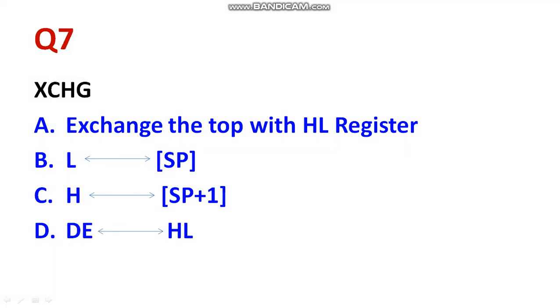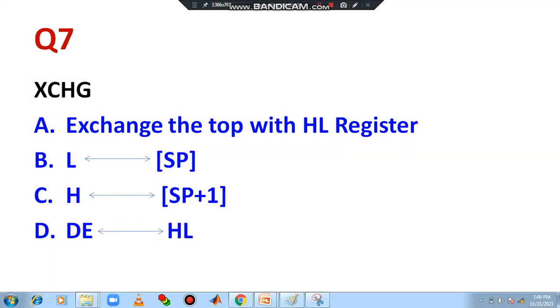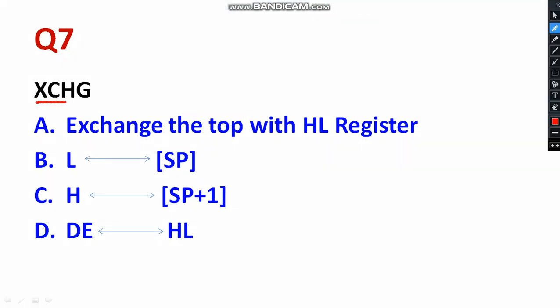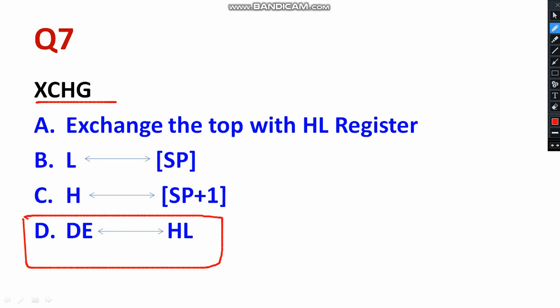Question 7: What is the word meaning of the instruction XCHG? XCHG means exchange — that is the right answer. XCHG exchanges the data between HL and DE. DE is a 16-bit register and HL is also a 16-bit register. So the 16-bit data have been transferring to each other. That is the word meaning of XCHG.